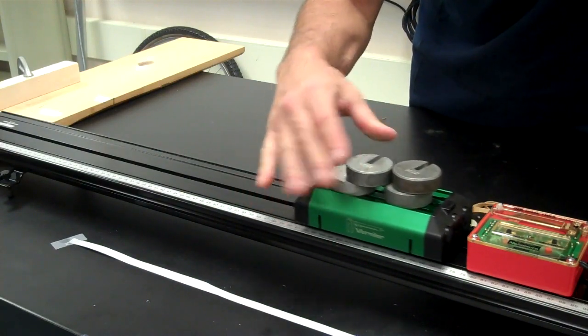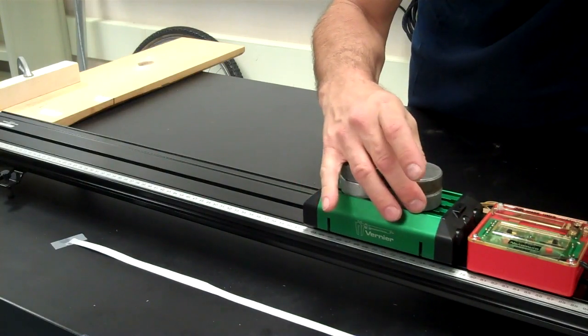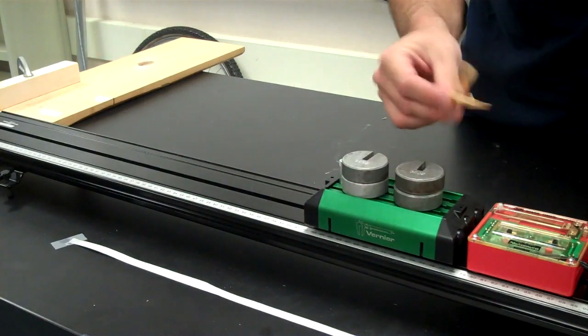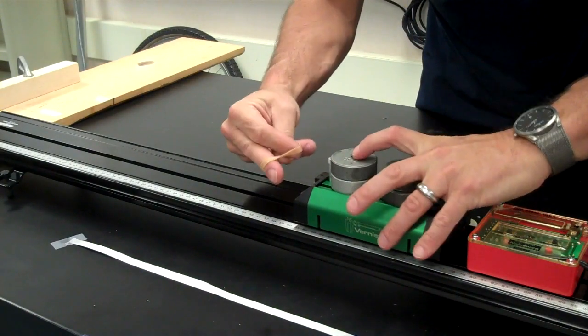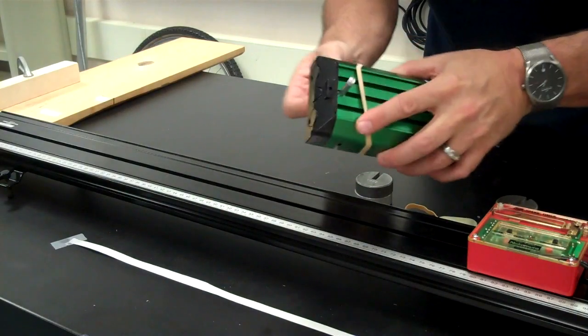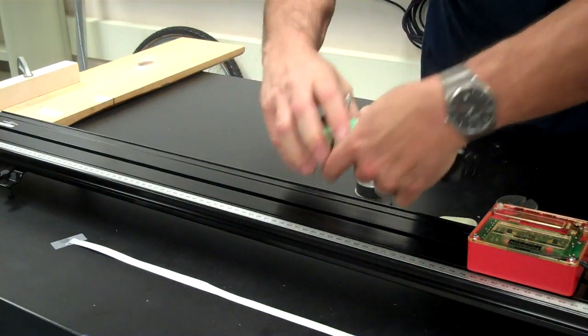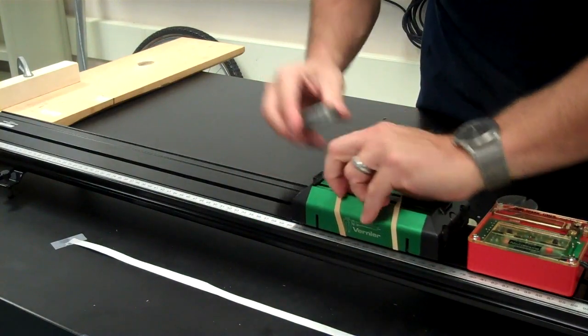And because they're on there loose, we don't want them falling off the table and hitting you in the toes, because that will hurt. So take rubber bands and just put them around the cart. And then you can secure your weights to the cart with the rubber bands.